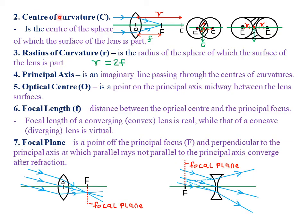Our second term of definition is what we call the center of curvature, denoted by capital C, which refers to the center of the sphere of which the surface of the lens is a part. The concave and convex lenses are usually obtained from spheres — parts of spheres. For example, you can see a first sphere and a second sphere; when you cut this particular part of the two spheres, they form what we call a bi-convex lens. The center of these particular spheres from which we cut our lenses is what we call the center of curvature.